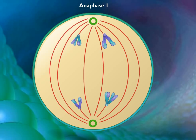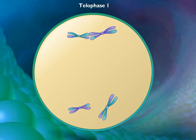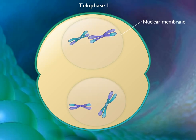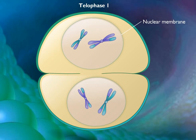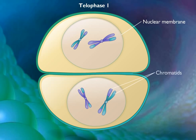During telophase I, the nuclear membrane reforms around the daughter nuclei. Each daughter nucleus contains two sister chromatids for each chromosome attached to a common centromere. Because of crossing over, the two sister chromatids are not identical.